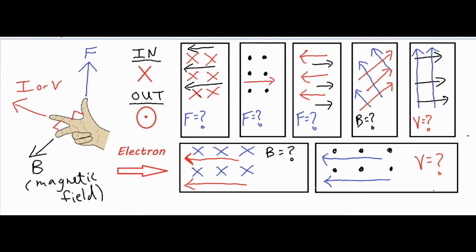For the first example, I'm lining up my pointer finger with the current or velocity. My pointer finger goes straight into the screen, and I make sure my middle finger lines up with the black arrows — pointing directly to the left. When I do that, my thumb is pointing up on the screen. So the answer is: the force applied on that positively charged particle is directed upwards.